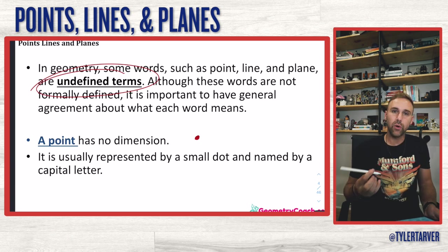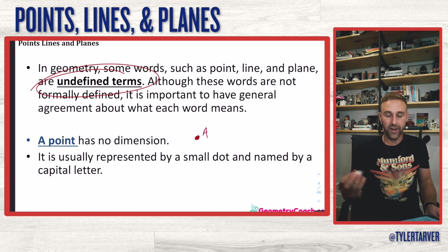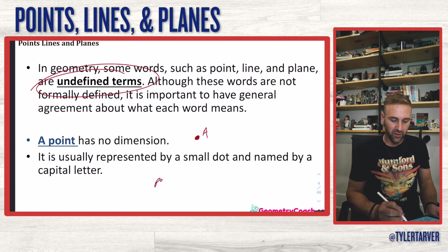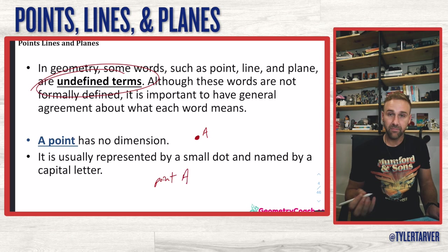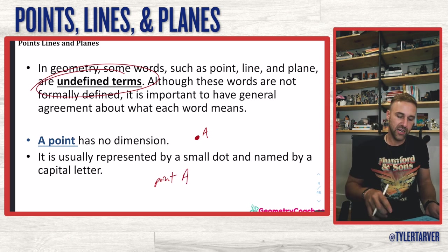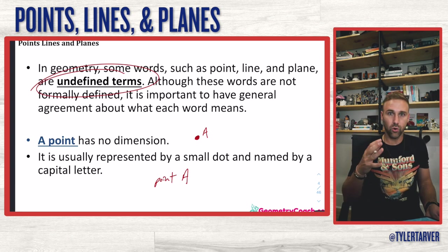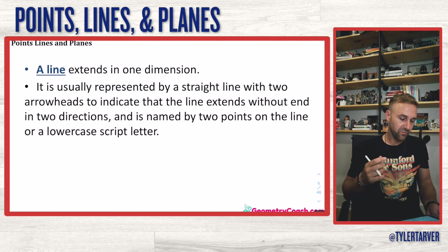A point is usually represented by a small dot and named by a capital letter. So this would be like point A — and when you talk about it, you're going to call it point A. That's how you label it. Point A, dot, coordinate point A — that's what it looks like.